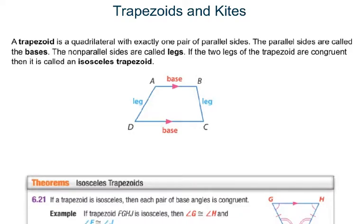Hello class, this lesson is titled Trapezoids and Kites. We've been dealing with specific quadrilaterals: parallelograms, rectangles, a rhombus, and a square. Recall that a rectangle, rhombus, and square are all specific types of parallelograms — opposite sides are parallel and congruent. The other two specific quadrilaterals are trapezoids and kites.